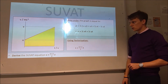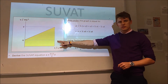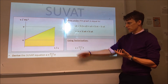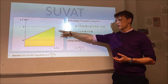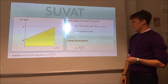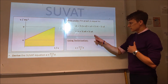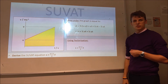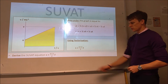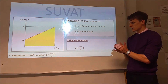Let's work out what the area under the graph equals. I've split it up into a rectangle and a triangle. The rectangle has area U times T. The triangle has area half times base times height, which is half times T times (V minus U). Multiplying out the brackets and simplifying — taking UT minus half UT — we get half VT plus half UT. Factorising out the half and T, we end up with our second SUVAT equation: S equals half times (U plus V) times T.